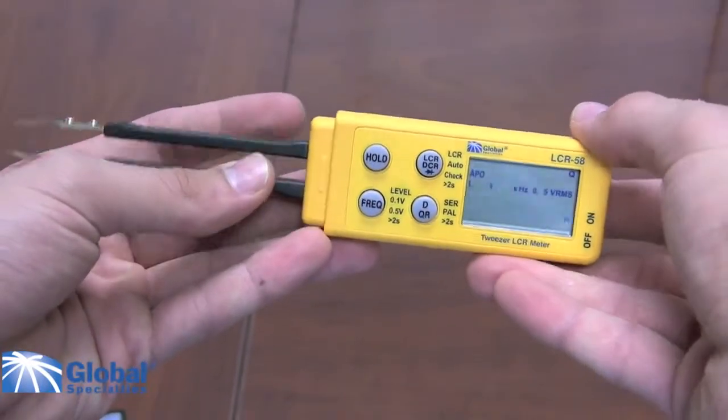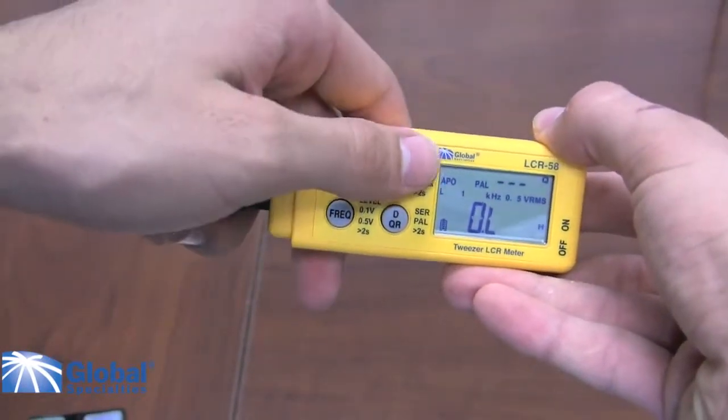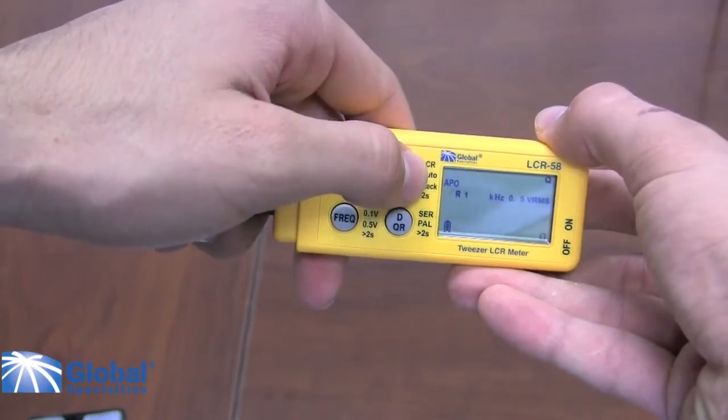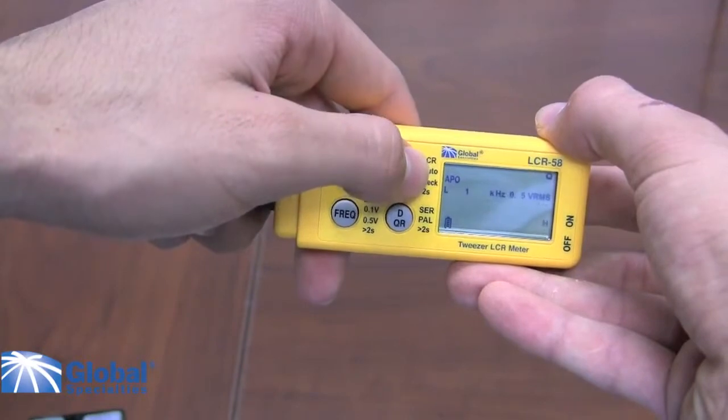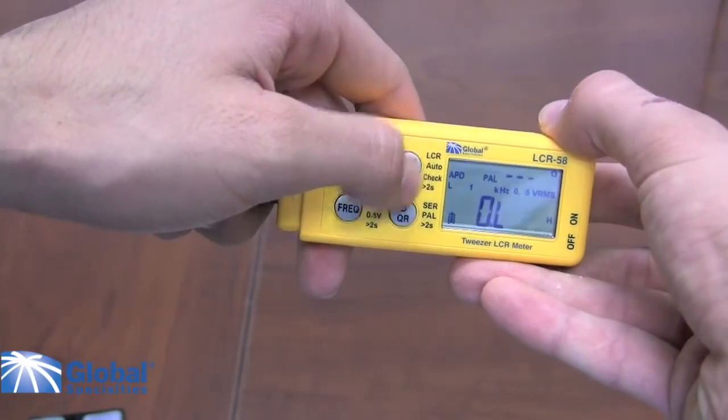The LCR58 is very easy to use. Remove the cover, switch the meter on, and it enters the auto-check mode. Pressing the mode button, you will be able to switch between measuring resistance, inductance, diode test, and capacitance.